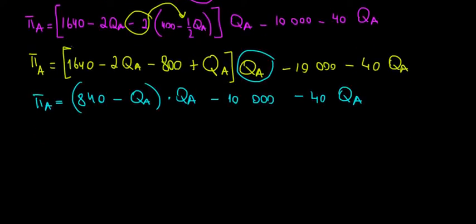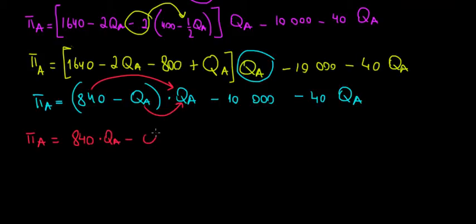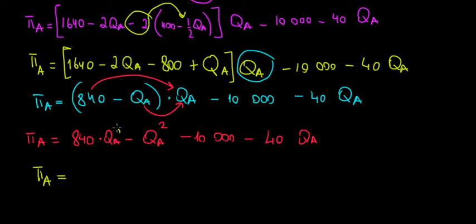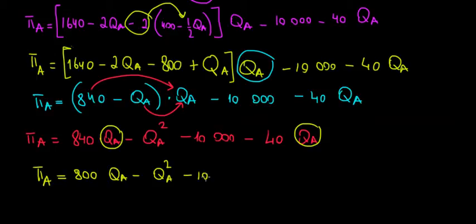Opening the brackets: profit of company A equals 840QA minus QA squared minus 10,000 minus 40QA. Combining the linear terms, 840QA minus 40QA gives 800QA. So profit of company A equals 800QA minus QA squared minus 10,000.